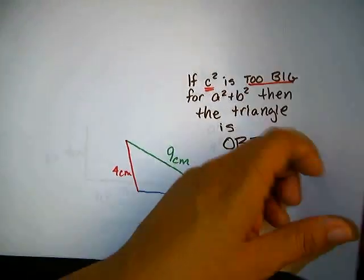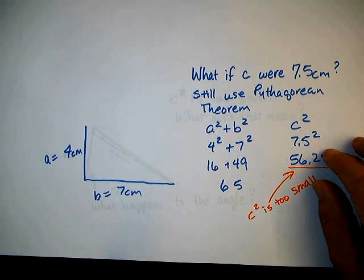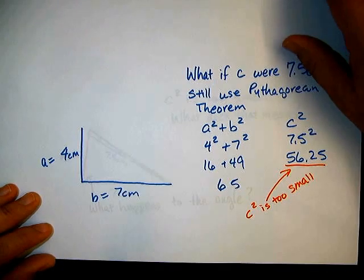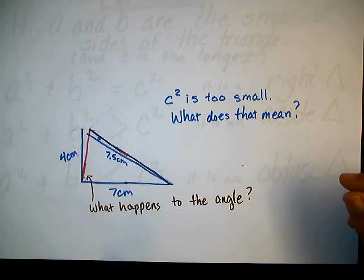Similarly, what would happen, let me look at a different set of sides. What if C were 7.5 cm? Well, you still use the Pythagorean theorem, and in this case, C squared is too small.